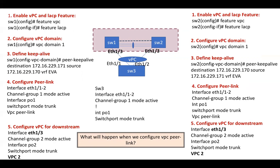Question: what will happen when we configure the VPC peer link under a port channel? As soon as we configure the VPC peer link command under a port channel, that particular port channel will become the VPC peer link. It will also change the MTU to jumbo and change the spanning tree port type to network. This depends on where you have configured the VPC peer link.